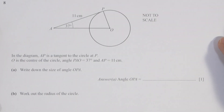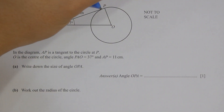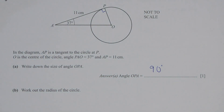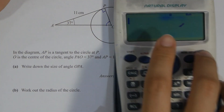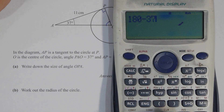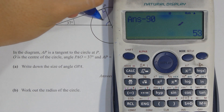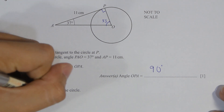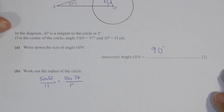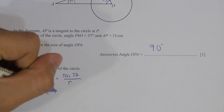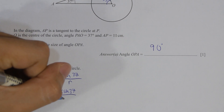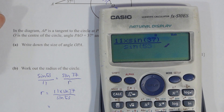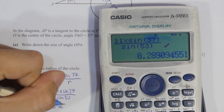For question 8, the key thing to note is that angle APO's value will actually be 90°, because it is the radius joining with a line outside of it. For the interior angle of a triangle, the sum is 180°, so 180 minus 90 minus 37 gives you 53 as the value of POA. With that, we can use sine to find the radius, and the value will actually be 8.29.